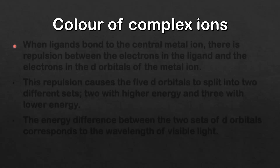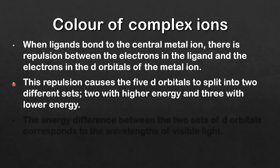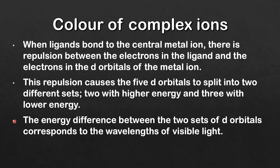Now we'll look at why wavelengths of visible light are absorbed when white light passes through a solution of a complex ion. When ligands bond to the central metal ion there is repulsion between the electrons in the ligand and the electrons in the d orbitals of the metal ion. This repulsion causes the 5 d orbitals to split into 2 different sets — 2 with higher energy and 3 with lower energy. The energy difference between the 2 sets of d orbitals corresponds to the wavelengths of visible light.